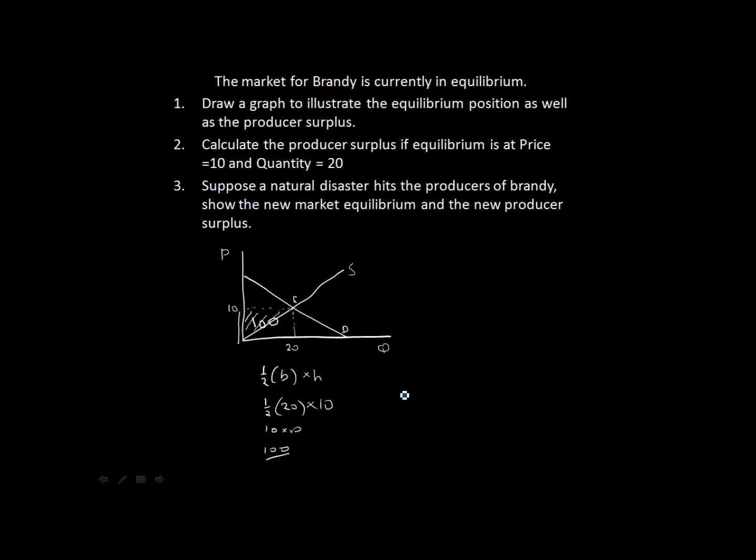So if a natural disaster hits, which means that now the producers of brandy can't produce the same quantity as they used to, because there's some natural disaster which influences their production, it means they're going to produce less. So we know that the quantity is now going to be less, our equilibrium quantity.